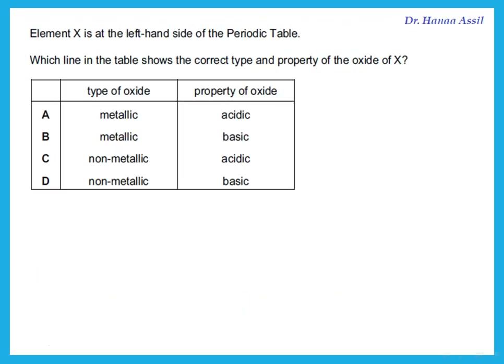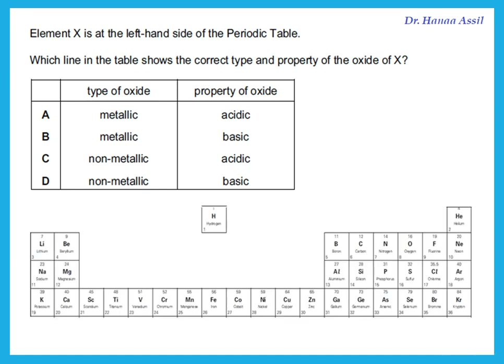Element X is on the left-hand side of the periodic table, so it is a metal. The type of oxide formed is a metallic oxide. Oxides of metals are usually basic — there are some exceptions we will discuss later, but generally, metal oxides are basic.